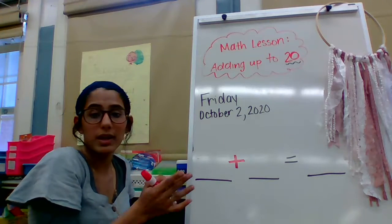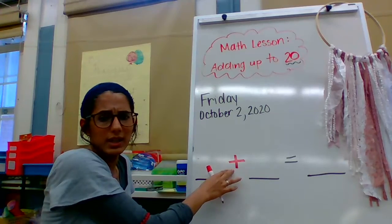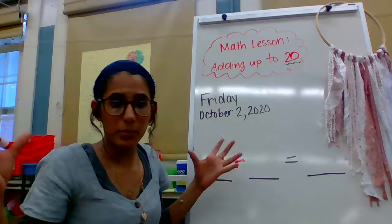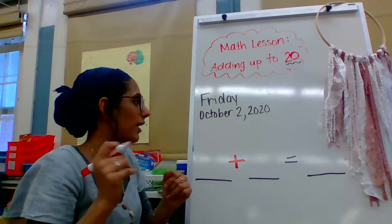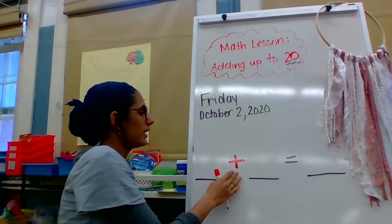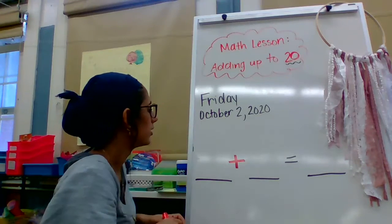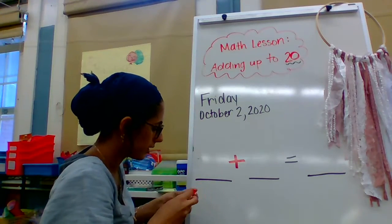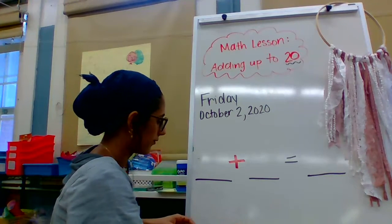That's right, it's a plus sign or an addition symbol. And what does it mean when I see this? What do I have to do to the numbers? Put it all together. Nice job. So this means I put these two numbers together, I combine them. All right, so let's put together some numbers, some big numbers.